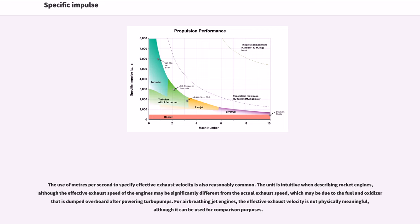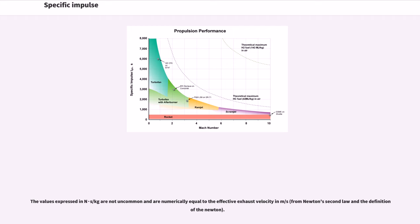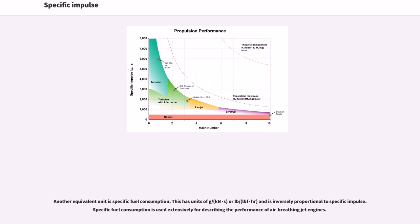The use of meters per second to specify effective exhaust velocity is also reasonably common. The unit is intuitive when describing rocket engines, although the effective exhaust speed may be significantly different from the actual exhaust speed, which may be due to fuel and oxidizer being dumped overboard after powering turbo pumps. For air-breathing jet engines, the effective exhaust velocity is not physically meaningful, although it can be used for comparison purposes. Values expressed in N·s/kg are numerically equal to the effective exhaust velocity in meters per second. Another equivalent unit is specific fuel consumption, in units of g/s/N or lb/hr/lb, which is inversely proportional to specific impulse and used extensively for describing air-breathing jet engine performance.